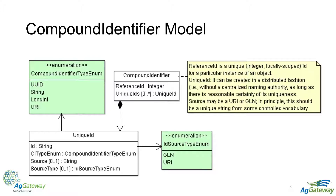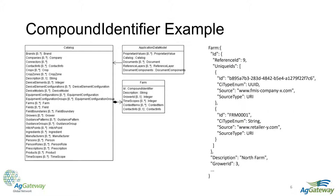It was also important to capture who this ID was coming from. We added a source field that lets us say who owns and created this ID and attached it to this object. Additionally, the source identifier has a source type. Right now we support two different types: one is a URI, the other is a GLN — a global location number.